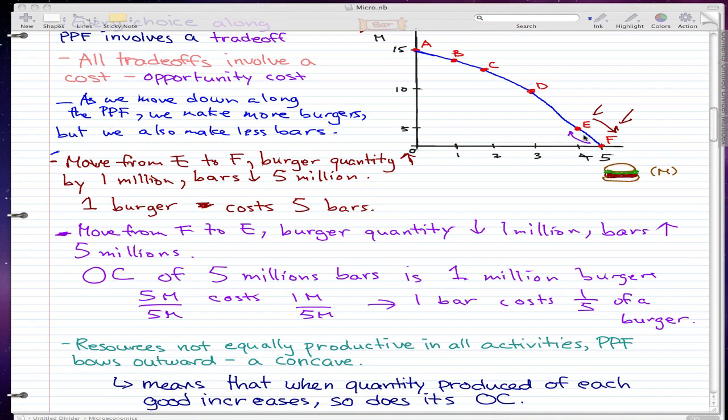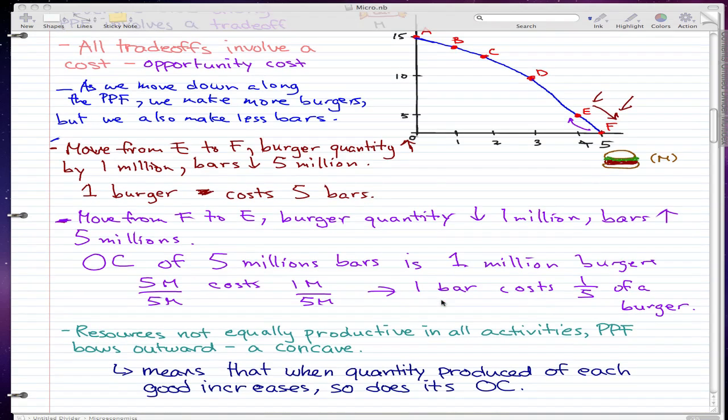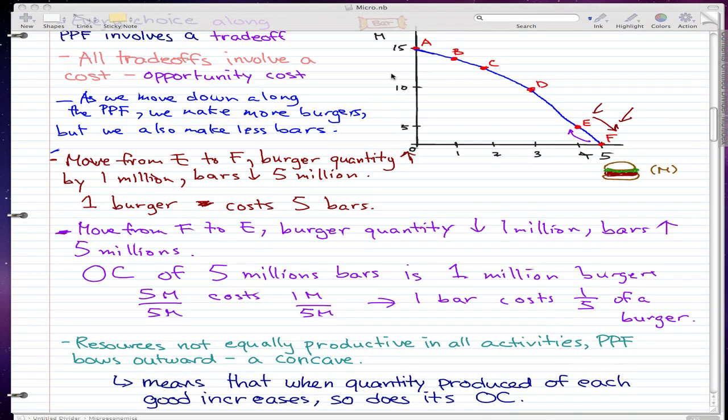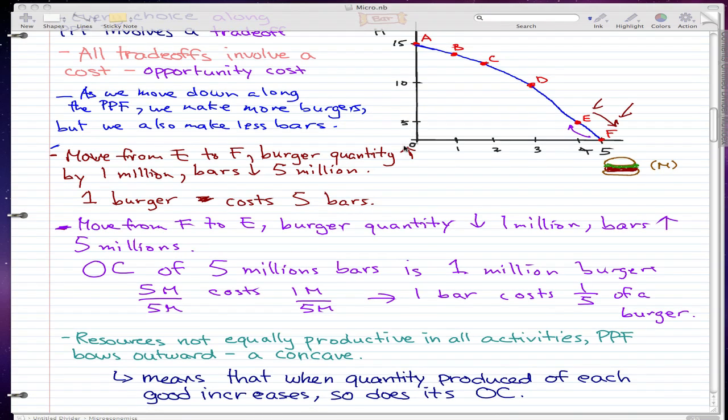Now, what this means is it means that when the quantity produced of each good increases, so does its opportunity cost. So when we produce more burgers, or if we produce more bars, then its opportunity cost will also increase.